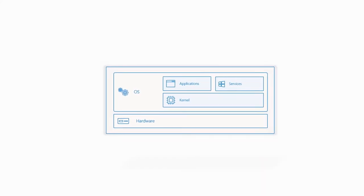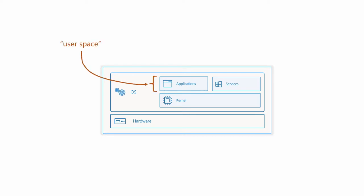In a virtual machine, you virtualize everything above the hardware. If you look inside the operating system, you have two levels. The first is the user space, where all your applications and processes run. The kernel space is where the operating system takes over and instruments everything happening at the application level down to the hardware itself — for example, when an application needs to access memory or the network card.